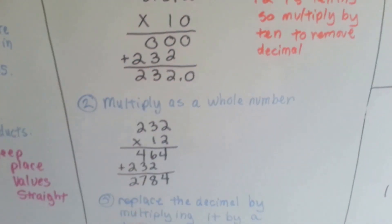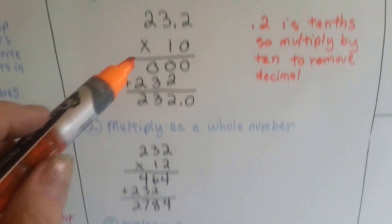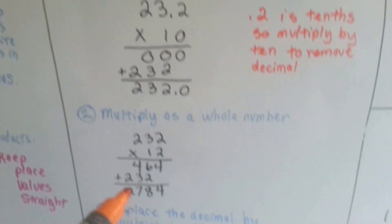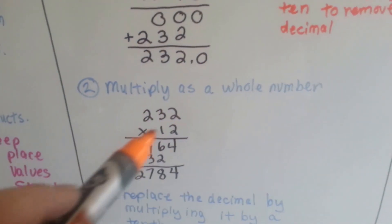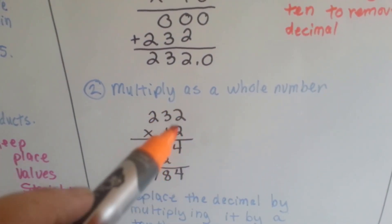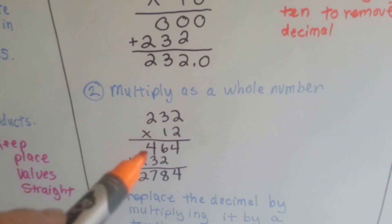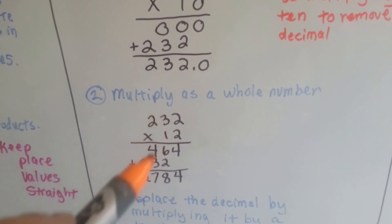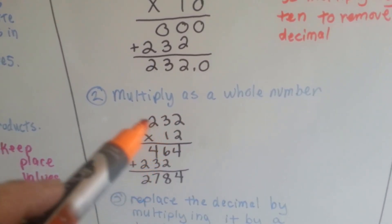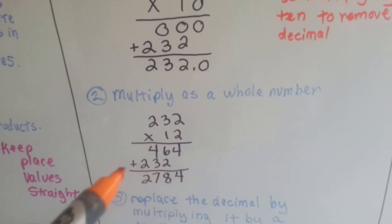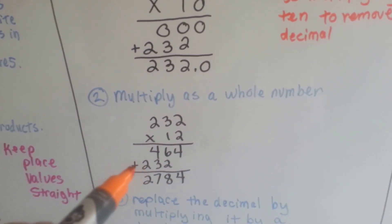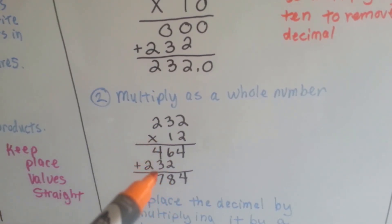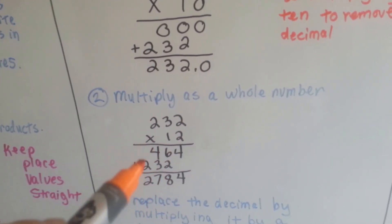Now it's a whole number, so we can multiply it times the 12 as a whole number. 232 times 12: 2 times 2 is 4, 2 times 3 is 6, 2 times 2 is 4. 1 times 2 is 2, 1 times 3 is 3, and 1 times 2 is 2. Draw our line, put our plus sign to add these up. We get 4 drops down, 6 and 2 is 8, 4 and 3 is 7, and we have 2.